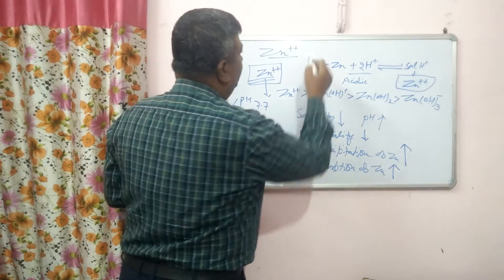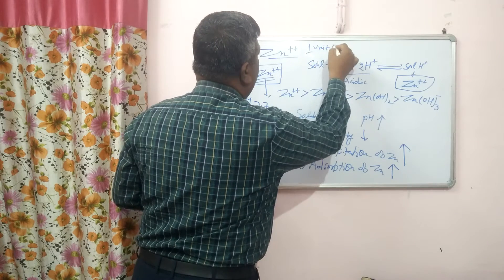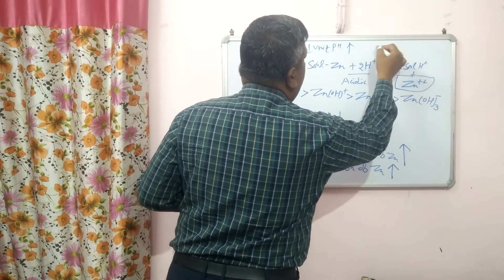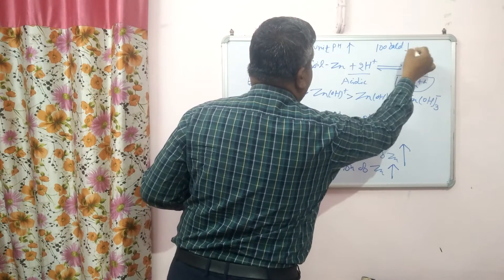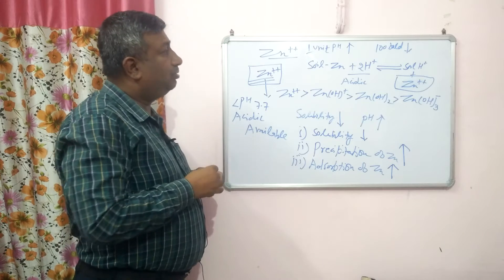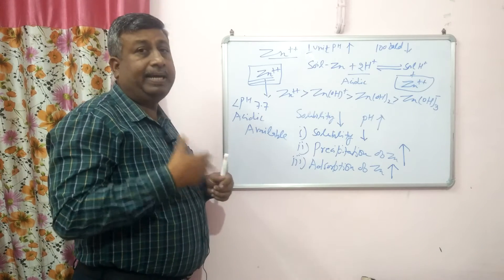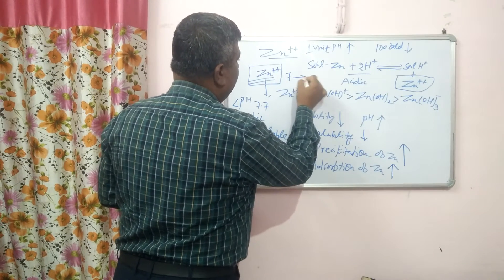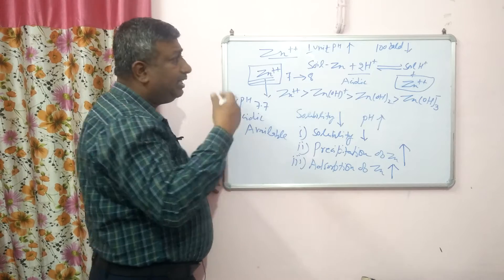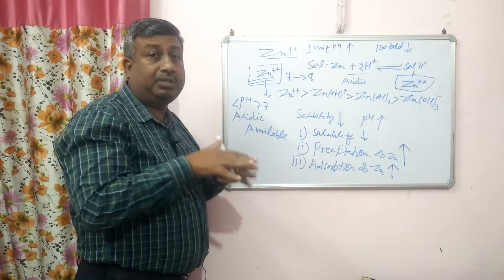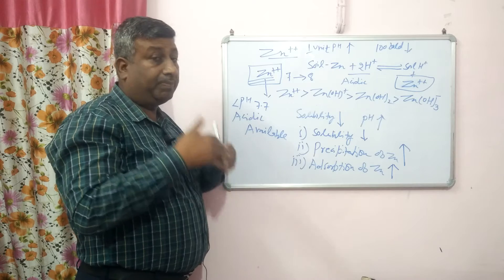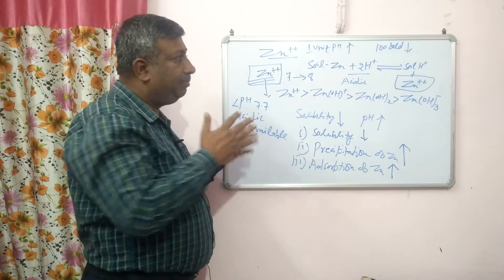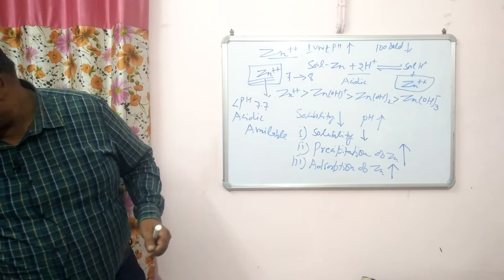It is observed that if pH increases by one unit, then zinc solubility or zinc availability decreases one hundred-fold. This is a remarkable effect of pH on zinc availability. That is why zinc is available under acidic conditions.